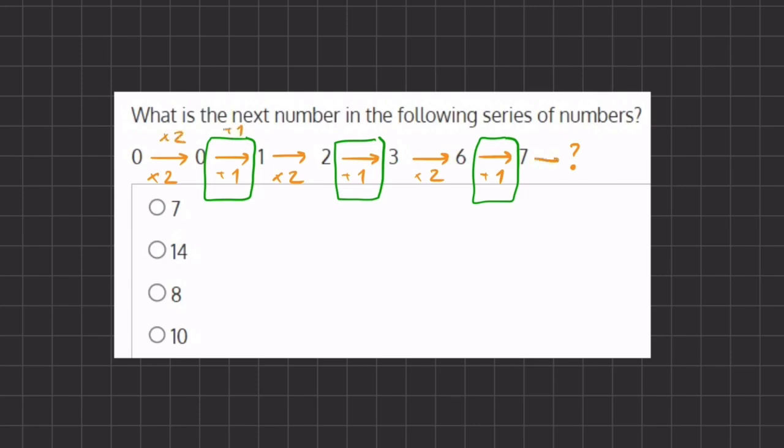So our next transition, if we added 1 here, our next transition should be multiplying by 2. So if we have 7 times 2, we get 14, which is going to be the next number in the following series. And this corresponds with answer B.